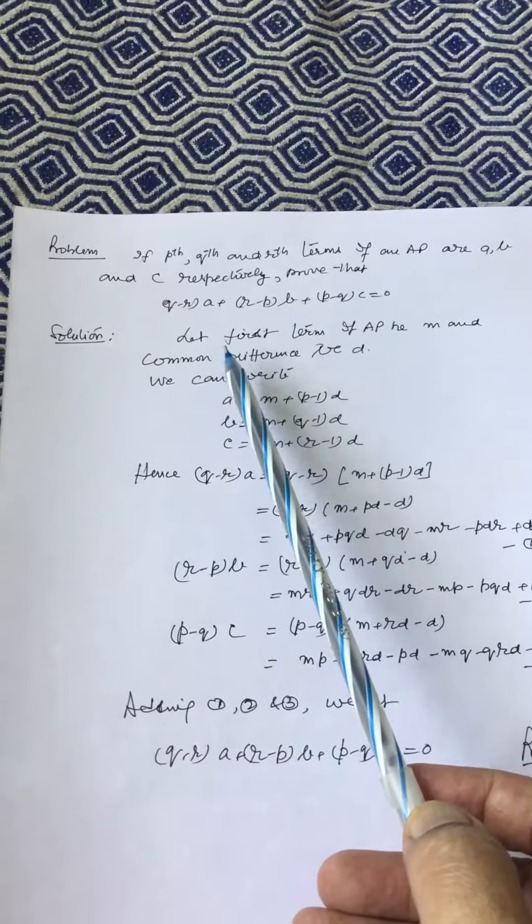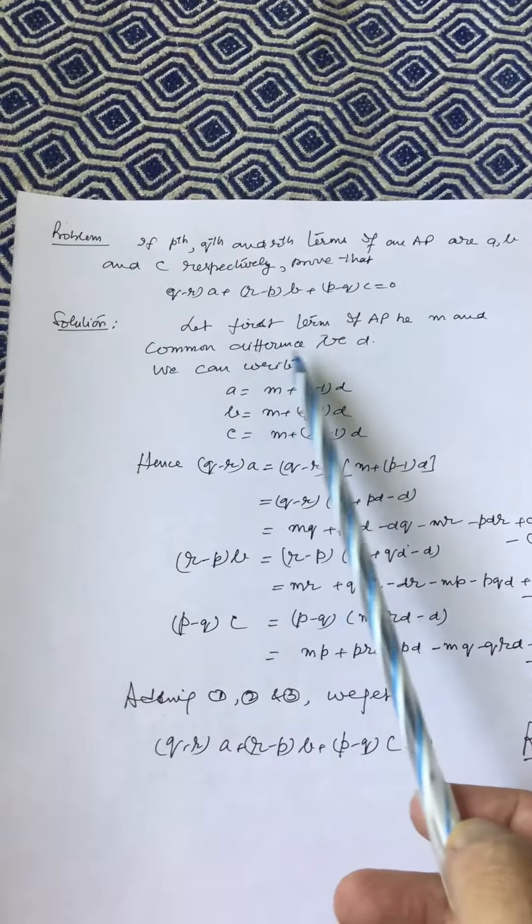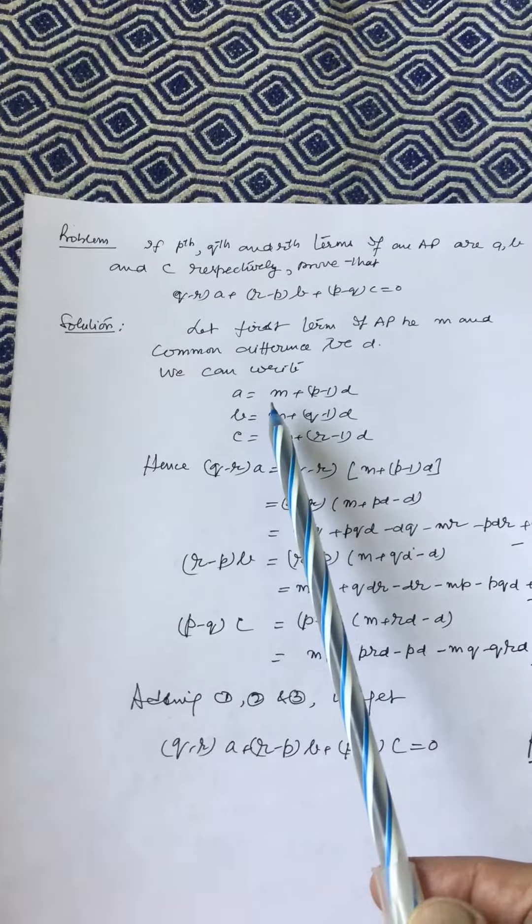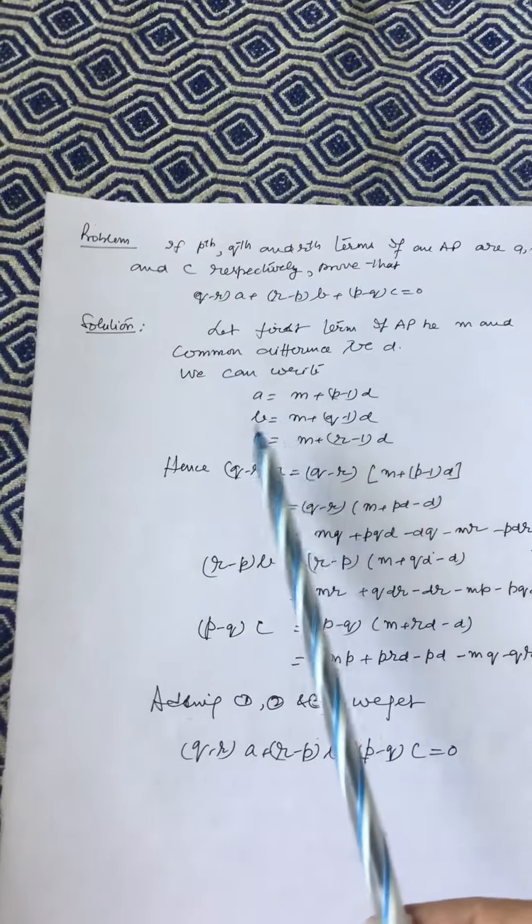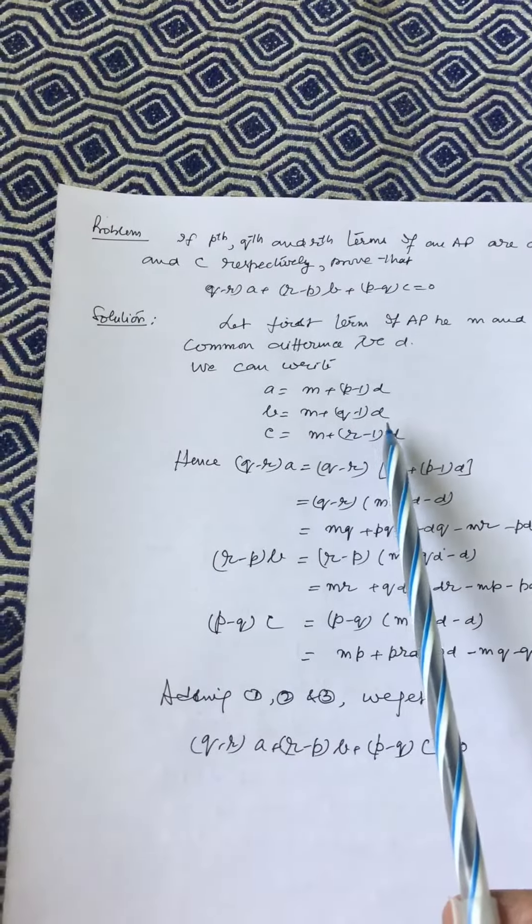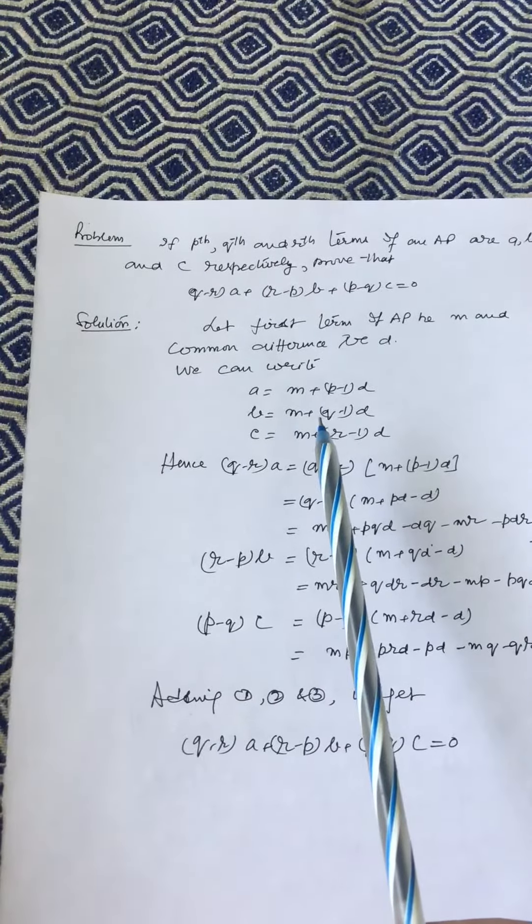Solution: Let first term of AP be M and common difference be D. We can write A = M + (P-1)D, B = M + (Q-1)D, C = M + (R-1)D.